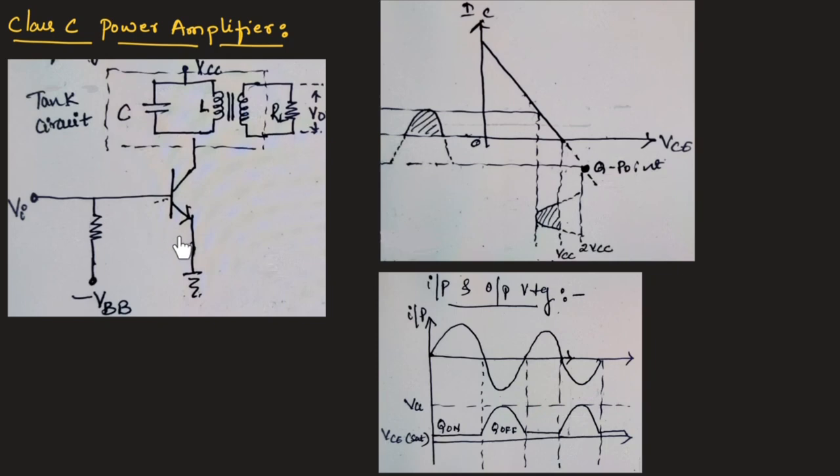This base emitter voltage is at Q point, which is below the cutoff region. This minus VBB is connected to the base circuit, which reverse biases the base emitter junction.